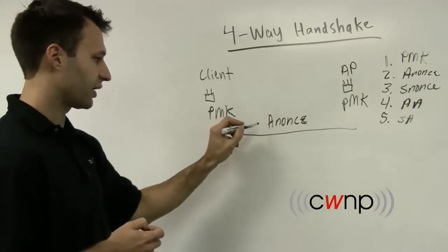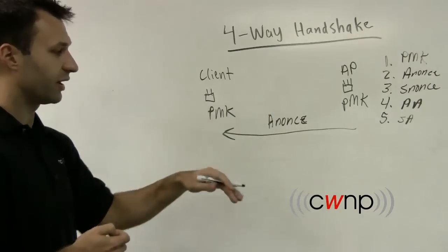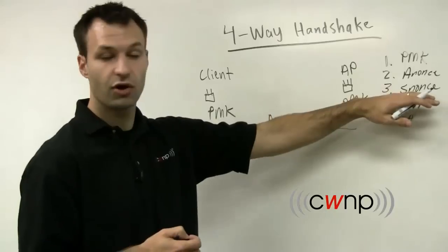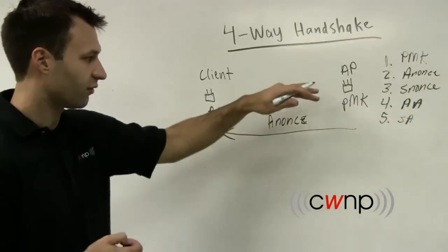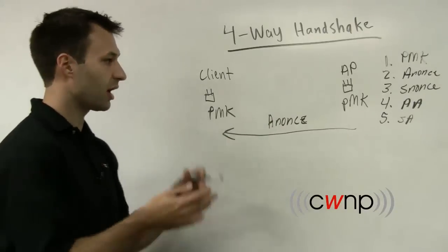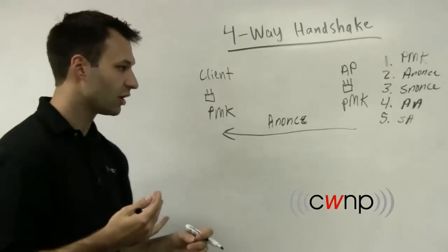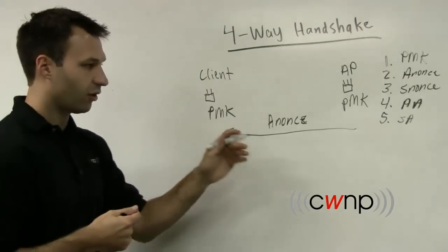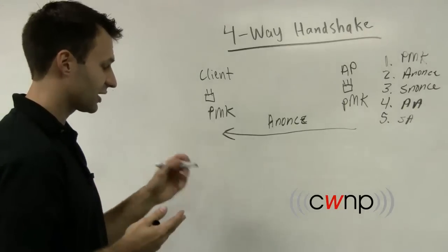Now if you notice here, the access point has already transmitted its ANUNCE to the client. The client at this point has already derived or calculated its own SNUNCE. And since both four and five here, both addresses are visible on the wireless medium, and obviously since they're already communicating, they know each other's MAC addresses. So at this point, the client has all of the inputs that are necessary to create encryption keys, at least unicast encryption keys.